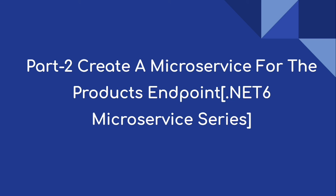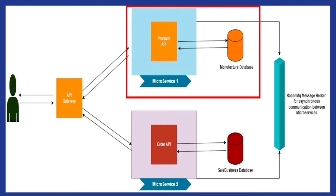Hi everyone, welcome to the .NET 6 Microservice series. This is the second video. In this video we are going to create a microservice application, which is a Web API application, in which we are going to implement the products endpoint. This is our microservice architecture flow, and the red highlighted box represents what we are going to implement today — the products microservice.